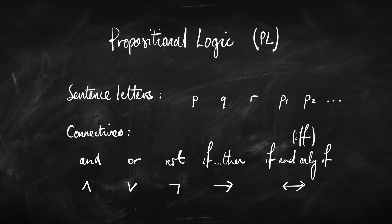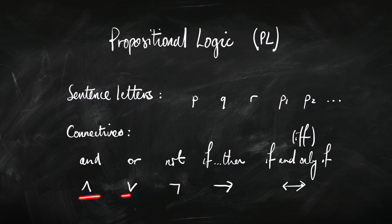How are you going to remember these symbols? There are a few tricks and hints. The 'and' symbol — the upward-pointing wedge — looks a little bit like an N, so it's like the N in 'and'. The V-shape pointing downward is for 'or'. There's no great trick for that one, other than remembering the 'and' symbol points up like an N, and 'or' is the other one.